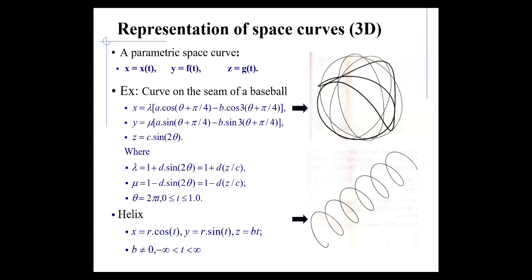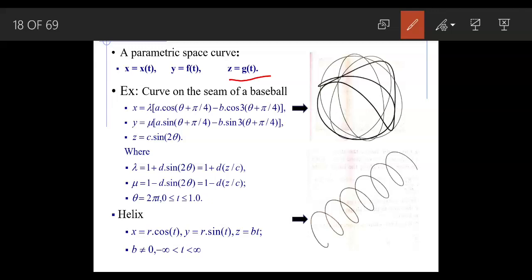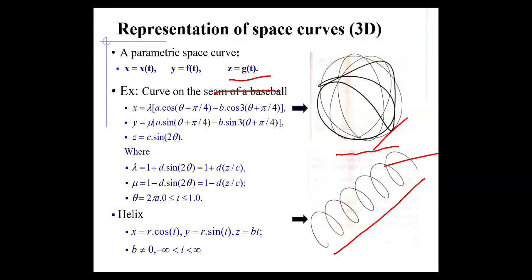The next is parametric representation of a space curve in 3D. Here we add the z parameter. Two examples are shown: one is the seam of a baseball, where drawing a curve with these three equations gives the shape shown in the diagram. The other is a helix, where parametric representation generates a curve like a spring.